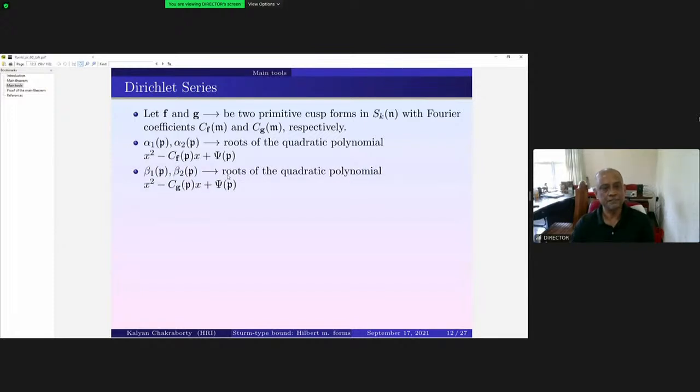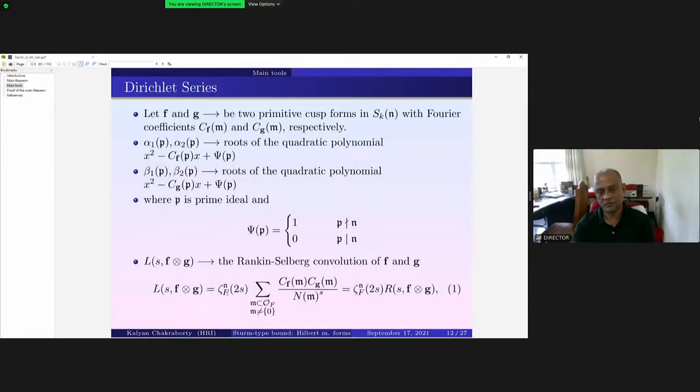Similarly for g, beta_1p and beta_2p for g corresponding to f. And now we can define this Rankin-Selberg convolution of f and g that I'll be denoting by L(s, f×g). This is cf(m)cg(m) by norm m to the power s.